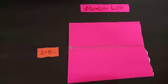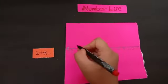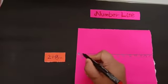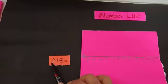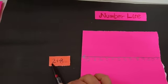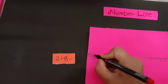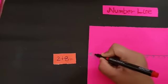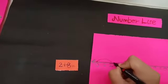From where we will start? Yes, we will start with 0. And our first number is 2. So up to where we will jump? Up to 2. Very good. So starting from 0, we will jump up to 2.